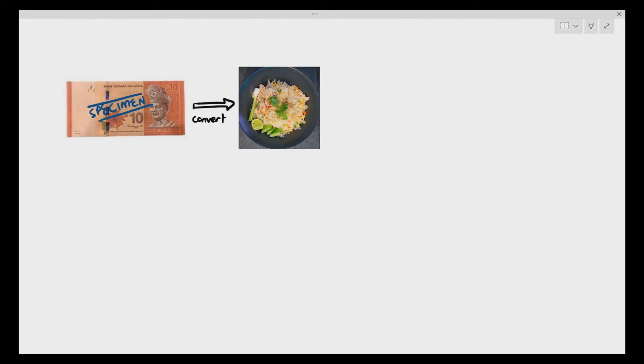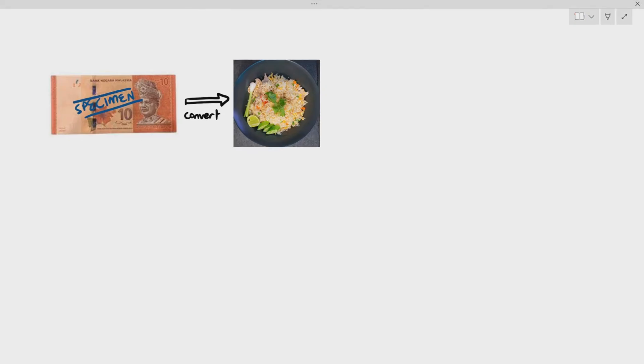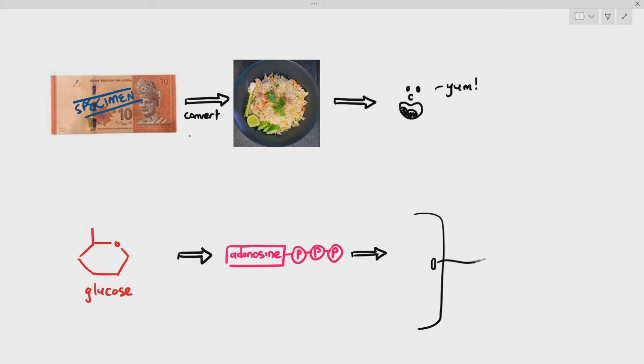So what happens is, you convert the 10 ringgit into a plate of fried rice by buying the fried rice using the money, and then you eat it. It's the same thing with glucose, ATP, and the movement of the cilia. The glucose represents the 10 ringgit. What needs to happen is, the energy or the value of the glucose has to be converted into ATP, and then the ATP, which is the energy currency, is the usable energy that can be used for the movement of the cilia. I hope the analogy makes sense, but we are going to look at it further in detail.